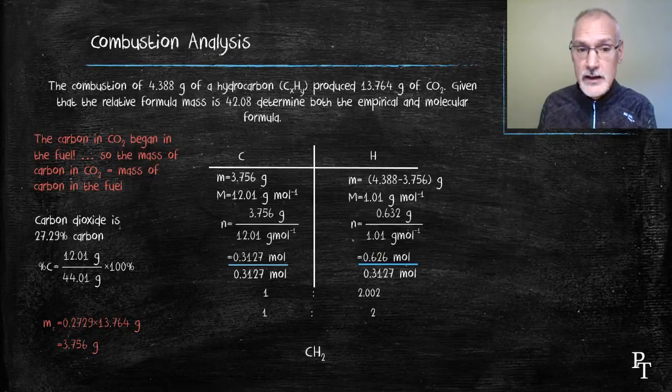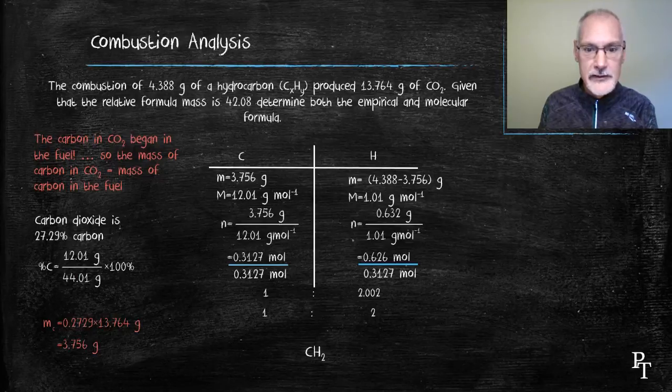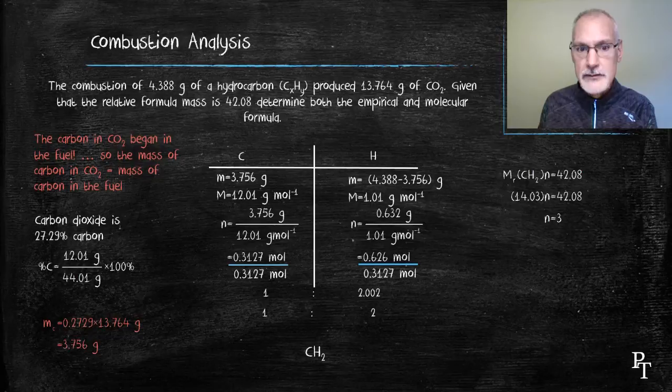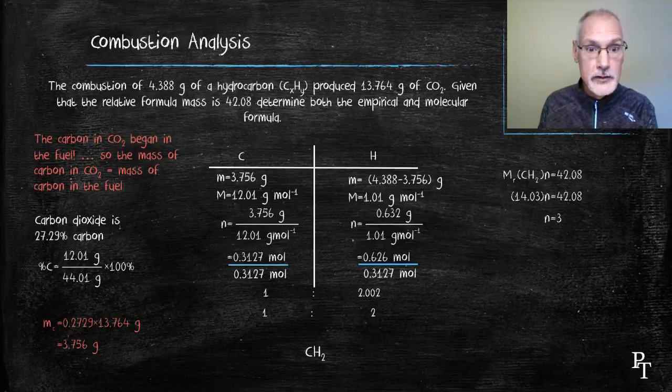Now, to determine the molecular formula, I turn to the formula mass of my substance. I know that if I multiply the molar mass of CH2 times some value n, it will arrive at 42. And n will be a whole number. It could be 1, 2, 3, 4, and so forth.